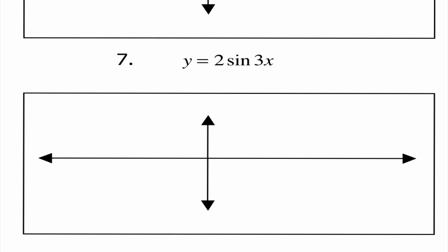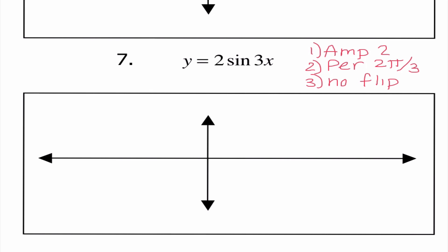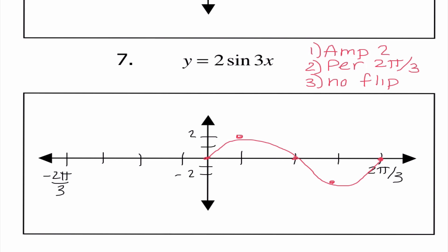Cosine starts at the amplitude, then 0, negative amplitude, 0, amplitude. Working backwards, I repeat that exact pattern. For y equals 2 sine of 3x: amplitude is 2, period is 2 pi divided by 3, and there is no flip. I label the fourth mark 2 pi over 3. Since it's sine, I start at 0, amplitude, 0, negative amplitude, 0. Working backwards: negative amplitude, 0, amplitude, 0.